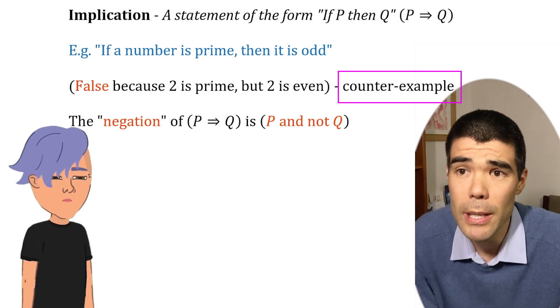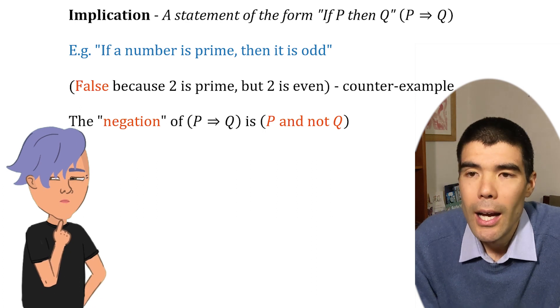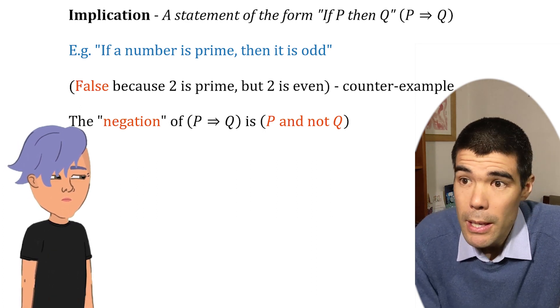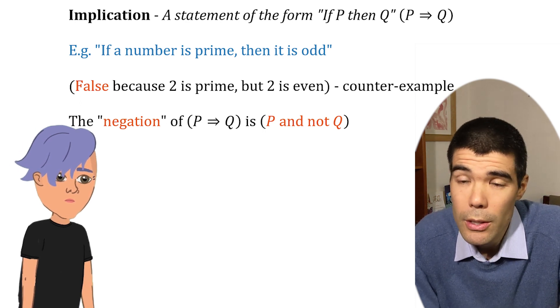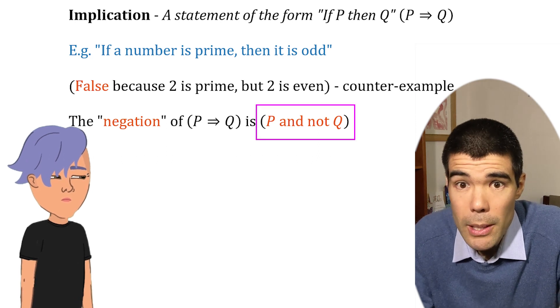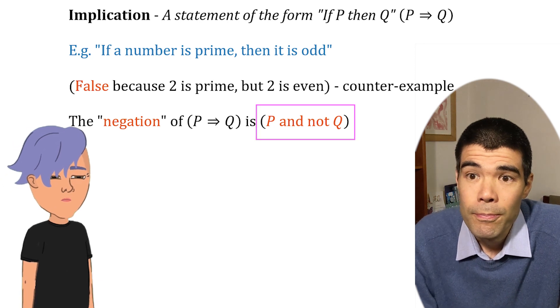Makes sense. So the negation of P implies Q is P and not Q. That's a bit confusing. I know, but think back to the example we just did with the primes. P there would be that the number is prime and Q would be that the number is odd. We disproved the implication by finding the prime number that was even, P and not Q. Okay, yeah, I guess that makes sense.